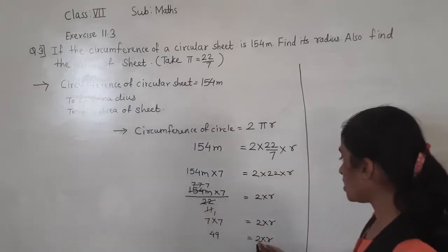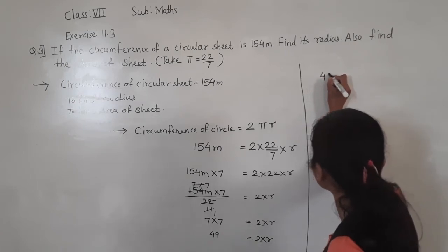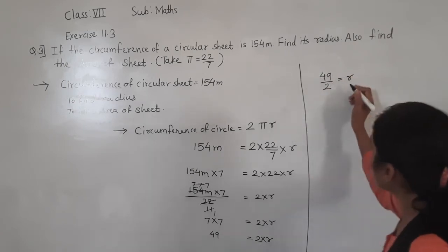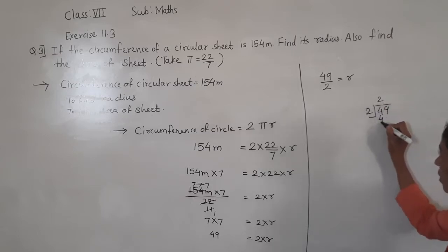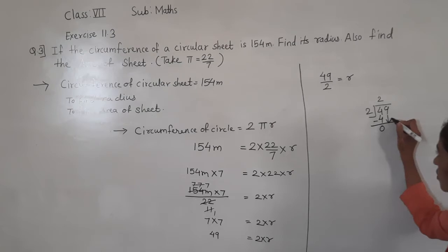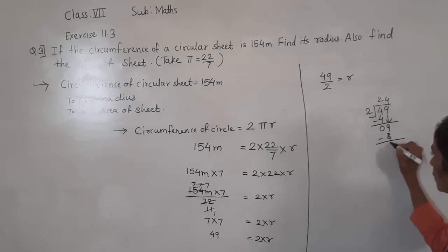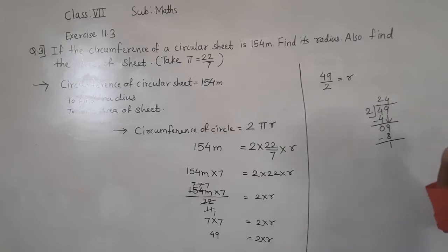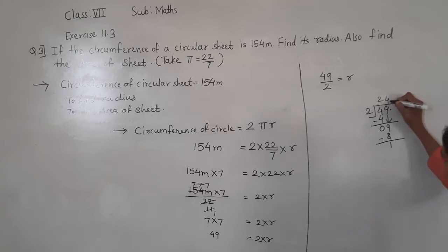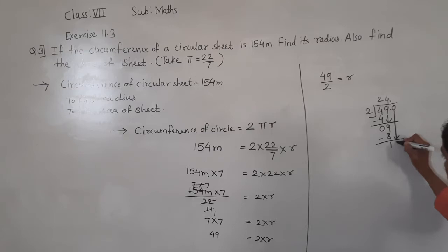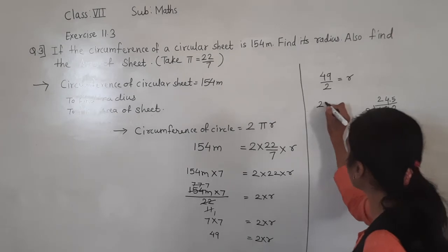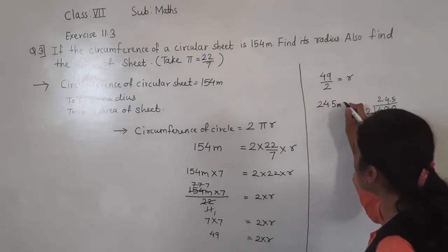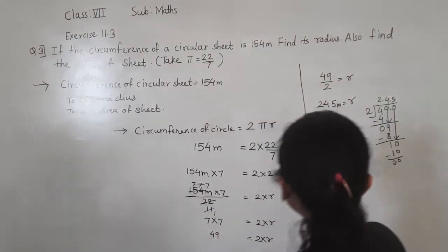So 49 = 2 × R. Transfer 2 to the other side — it becomes divided. So R = 49 ÷ 2. Dividing: 2 × 24 = 48, remainder 1. After the decimal point, 10 ÷ 2 = 5. So R = 24.5 metres. The radius is 24.5 metres.